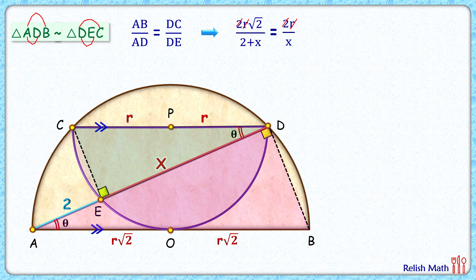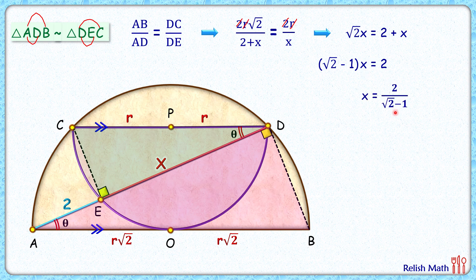We get root 2 upon (2 + x) equals 1 upon x. Cross multiplying gives root 2 times x equals 2 plus x. Taking x to the other side gives (root 2 minus 1) times x equals 2, so x equals 2 upon (root 2 minus 1). Rationalizing the denominator gives x as 2(root 2 + 1). Putting in the value of root 2, we get x as approximately 4.83 centimeters, and that's our answer. I hope you enjoyed the solution.